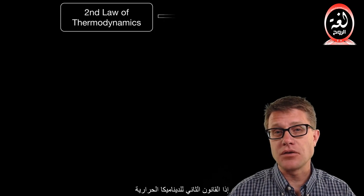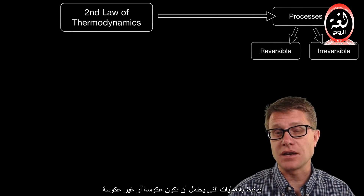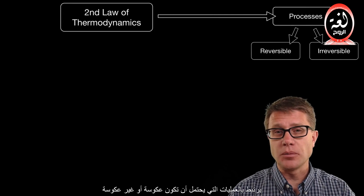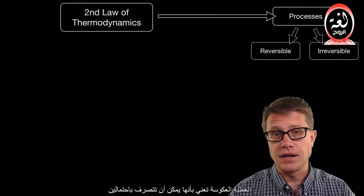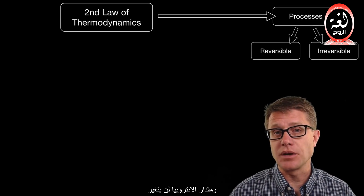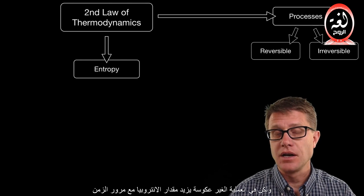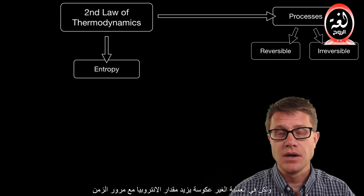The second law of thermodynamics relates to processes that can either be reversible or irreversible. Reversible means they can go either way and the amount of entropy won't change. But in an irreversible process, the amount of entropy will increase over time.